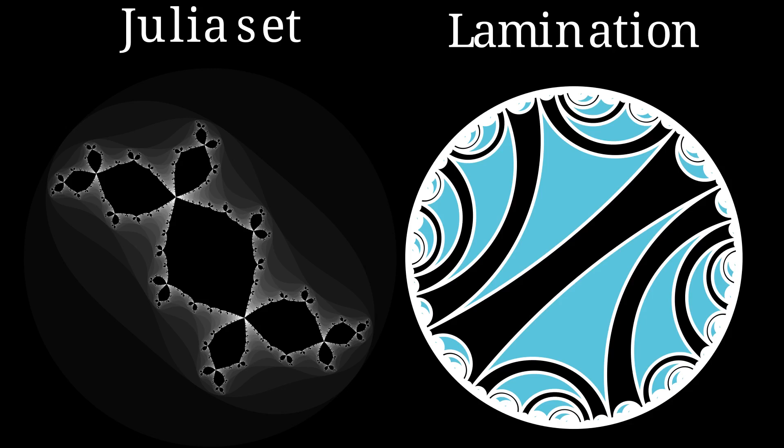The picture on the right is called a lamination of the unit disk, and can be generated from the Julia set, and serves as both a topological and combinatorial model for it.